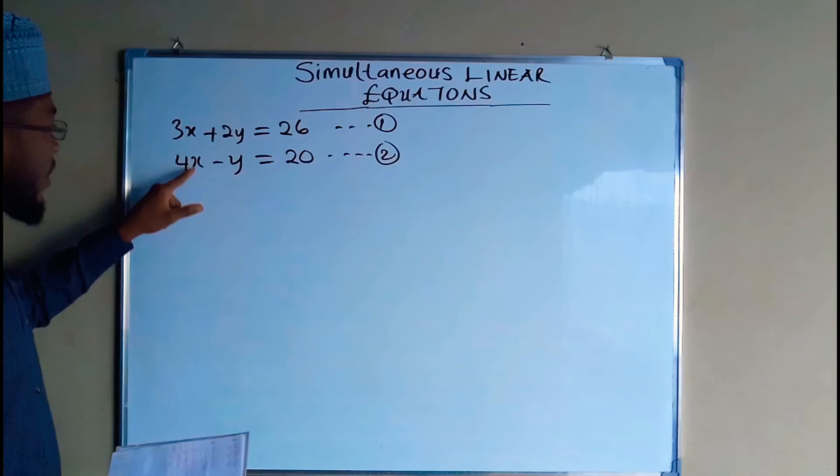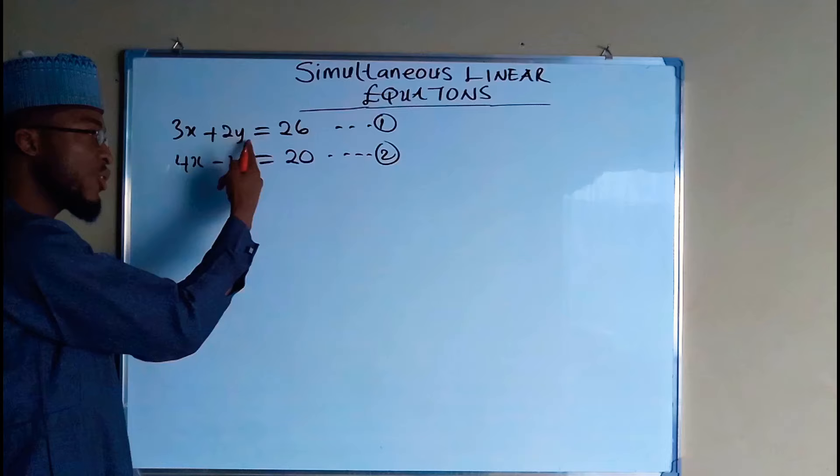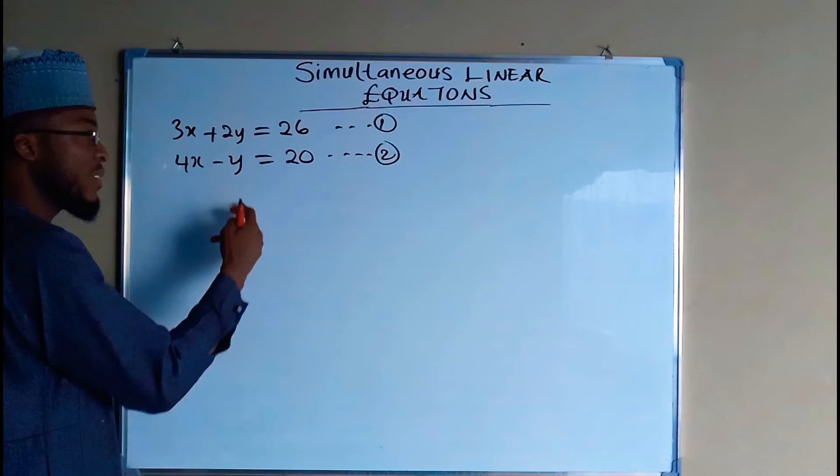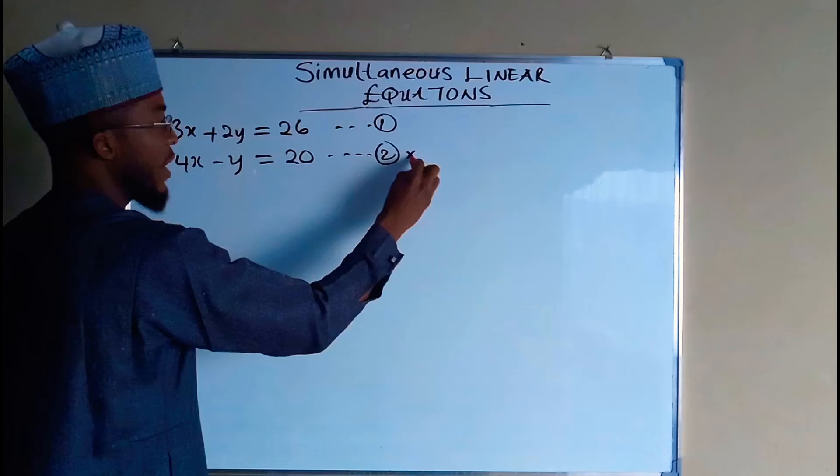You either make the coefficient of x in equation one and equation two to be the same, or you make the coefficient of y in equation one and equation two to be the same. So for this we are going to eliminate y by making equation one and equation two both having the coefficient of y the same.